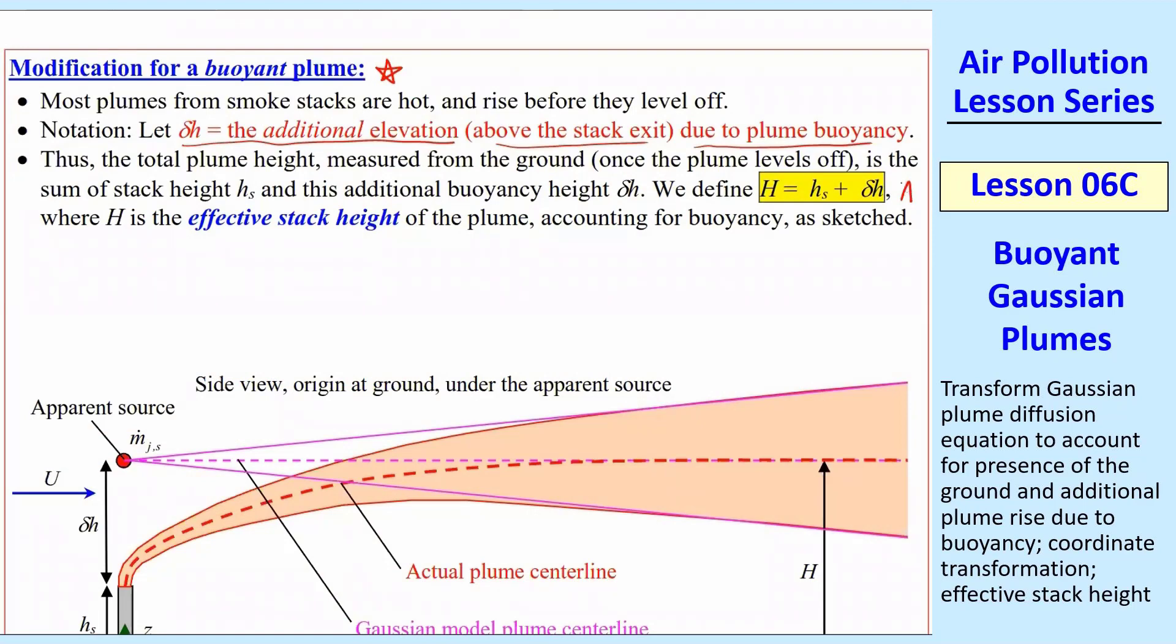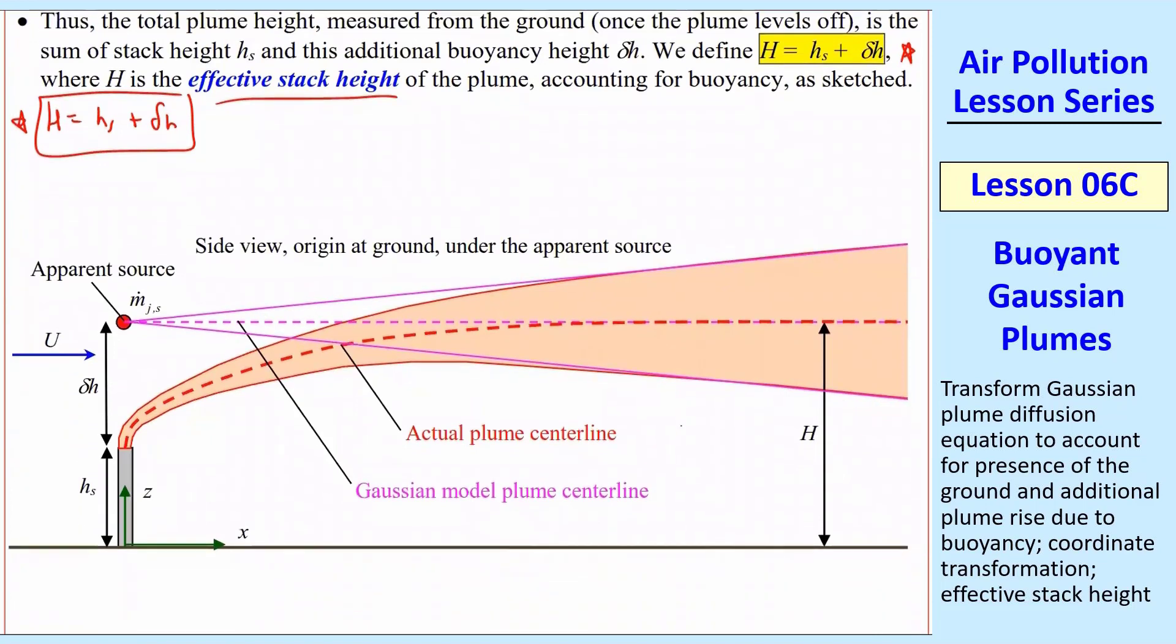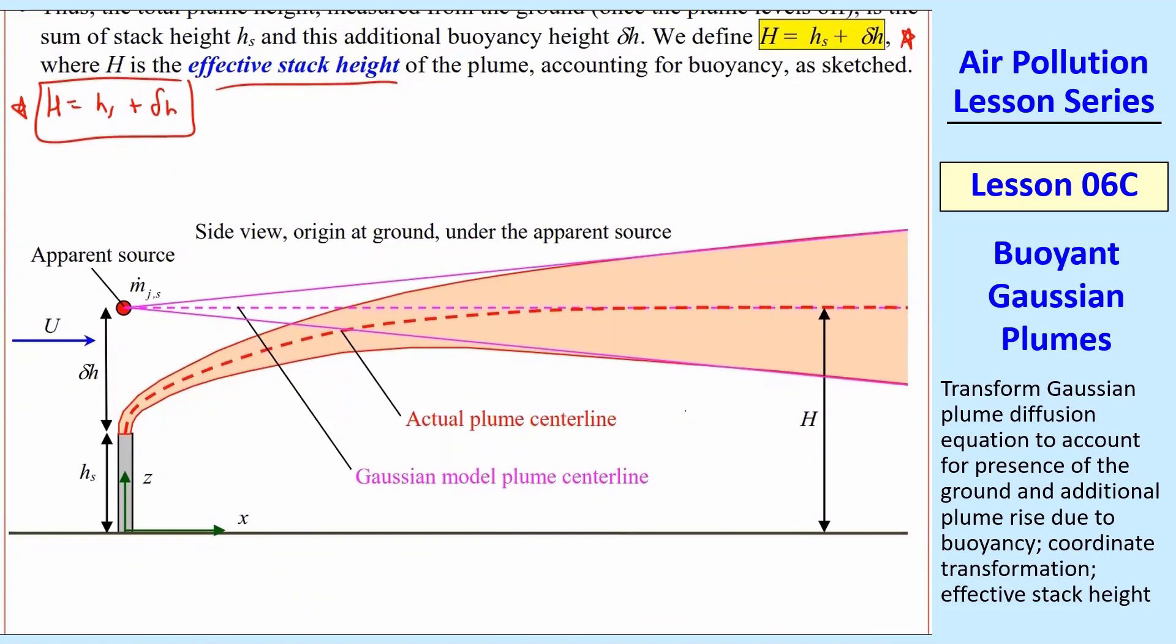So let's define capital H as hs plus this delta h. That will be the effective stack height where we will put our source. So how do we do this? Again, the easiest way is to just transform z. We're going to leave z as the ground, but we're going to just transform so that this source is now up here instead of right at the top of the stack. So instead of the source being at hs, it's now at hs plus delta h, which is capital H, the total.